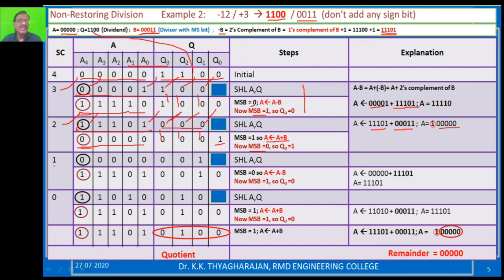Decrement the step counter — it is now 1. Same three operations: shift left, check MSB, do A plus B or A minus B. After shifting left, A becomes five 0s and Q has 001 plus one blank. Check MSB — MSB is 0, so you have to perform A minus B. A is five 0s and minus B is 11101.